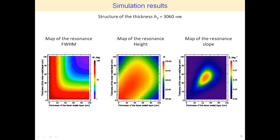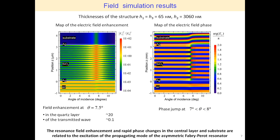These results suggest that the resonance characteristics in MIM structures based on Fabry-Perot modes can be tuned in a wide range. To clarify the origin of the resonances shown in the previous figures, we calculated the electromagnetic field generated in the structure with silver layer thicknesses of 65 nm and quartz layer thickness of 3060 nm. A TM-polarized wave incidence was used with the transfer matrix method. The distribution of the electric field enhancement factor is shown as a function of position in the structure along the Z-axis and the angle of incidence, shown as a color map of the ratio of the squared amplitudes of the y-components of the electric field to the field of the incident wave.